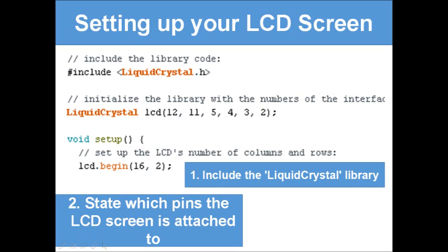The second part is to declare which pins the LCD screen is attached to — in other words, initialize the library with the interface pin numbers: `LiquidCrystal lcd(12, 11, 5, 4, 3, 2)`. If you wired it to different pins you'd change those numbers accordingly. The name 'lcd' is just what you give the screen — you could call it anything, but an appropriate name makes it easier, and if you use multiple screens you could name them lcd1, lcd2, lcd3, etc.